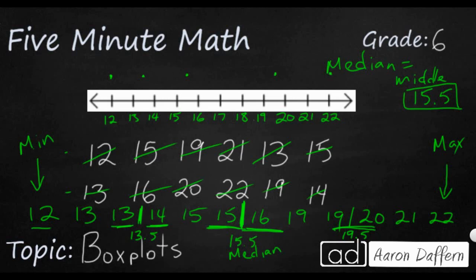And what we're going to do is we're going to put a vertical line here and that's going to be my median. And we're also going to put a vertical line here between my 13.5 and my 19.5. And we're going to draw a box around these three middle data points.